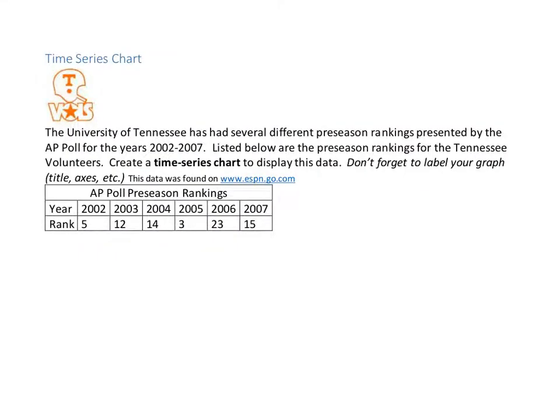So our next plot is going to be what's called a time series chart. And this one is about the University of Tennessee. UT has several different preseason rankings presented by the AP poll for the years 2002 to 2007. So what we have listed here are the preseason rankings for the Tennessee Volunteers. And we're going to create what is called a time series chart.